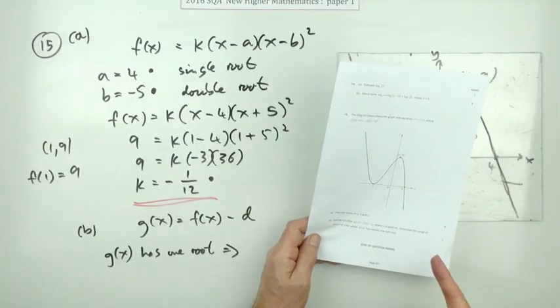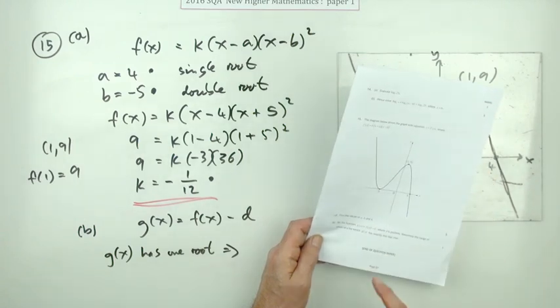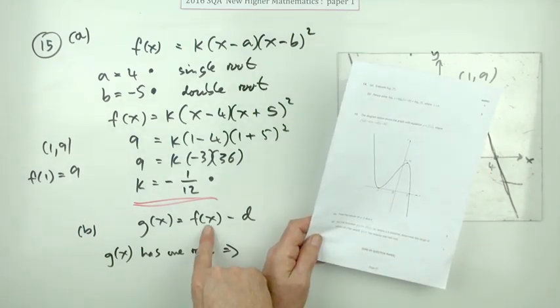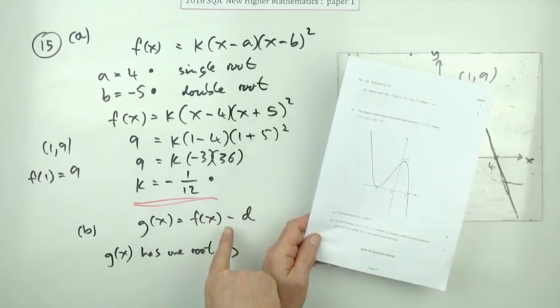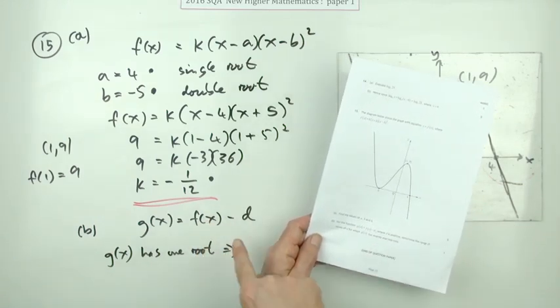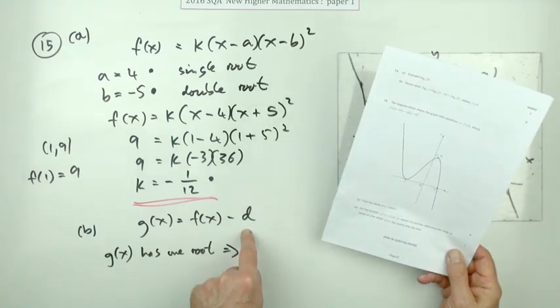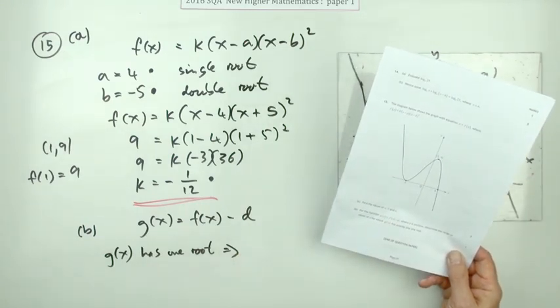Now part b, for one mark, the final mark from paper one. You've got this new function g(x) which is the original one f(x) only minus d, where d is positive, so dropped down d. Determine the range of values of d for which g(x), the new one, has only got one root.